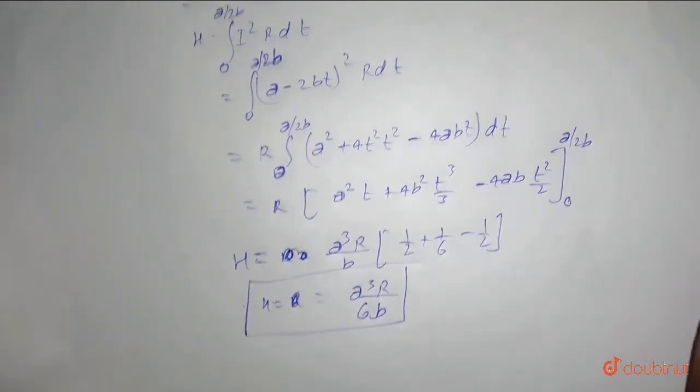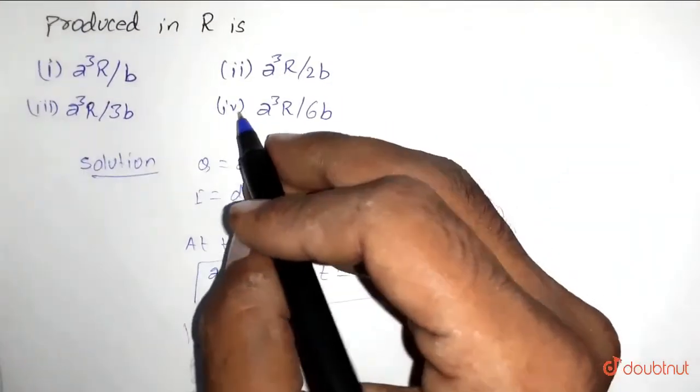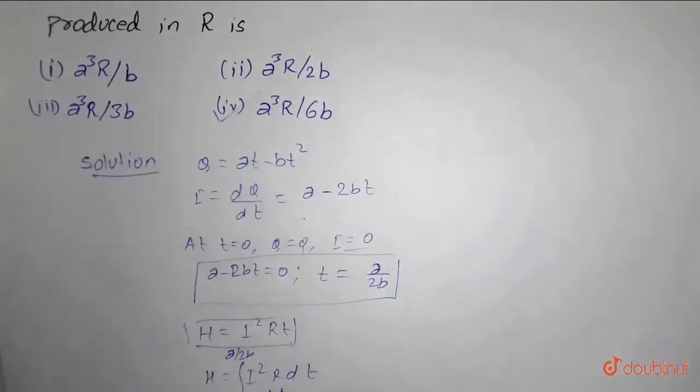So the correct option is option number 4, that is a cube R by 6b. Thank you.